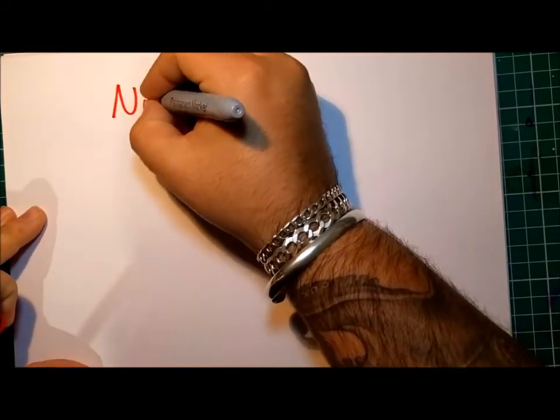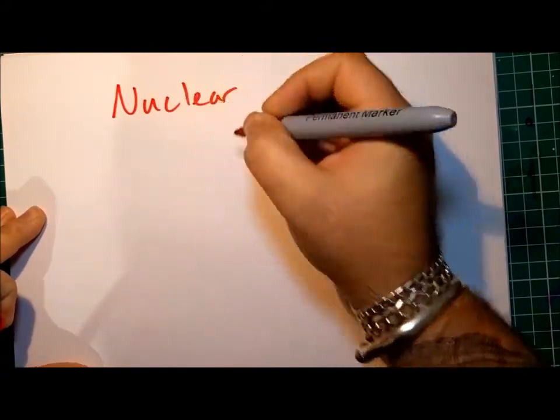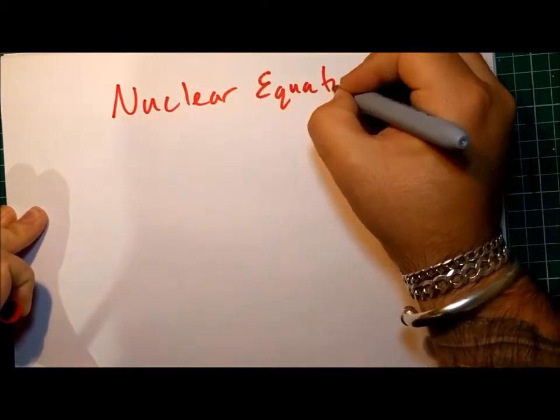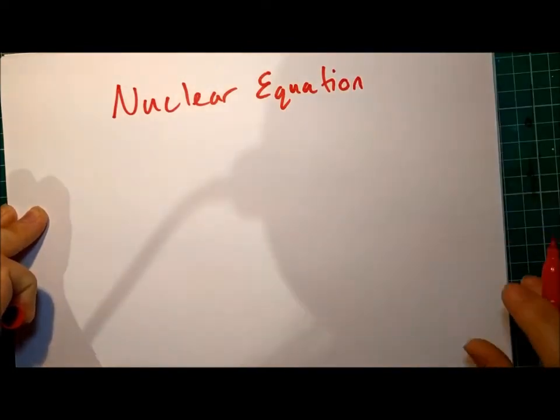Nuclear Equations. Hello, today we're going to talk about nuclear equations. Now, nuclear equations are clear, short ways of showing what happens to a nucleus when a particular type of radiation is emitted.